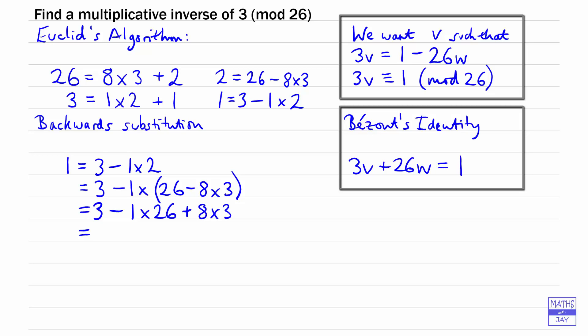So we now know that 1 is 9 times 3 minus 1 times 26. Notice I'm still leaving that 1 in there just to make it really obvious what the integer is that's multiplying the 26.